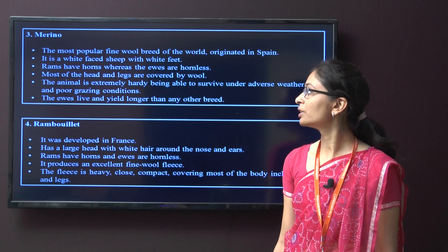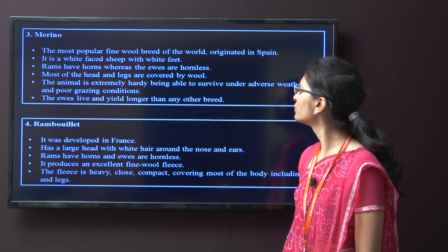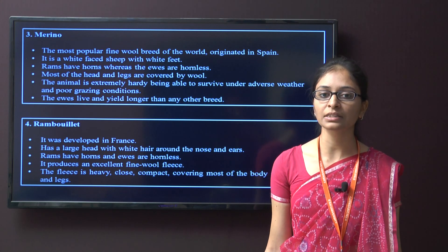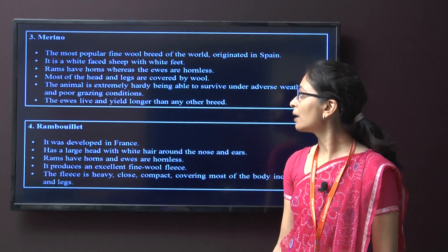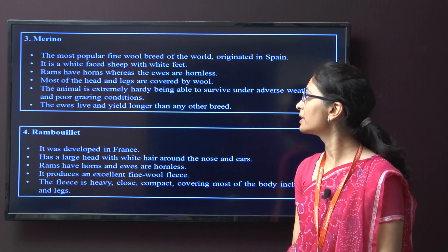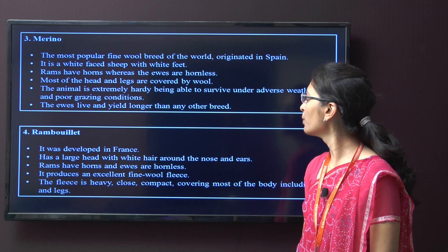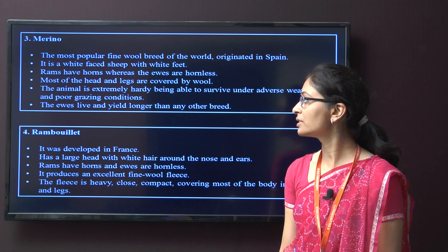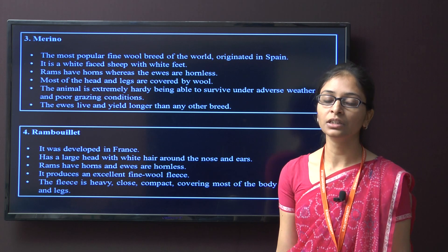The next breed for sheep is Merino. This is the most popular fine wool breed in the world, originated in Spain. It has a white face with white feet. The rams have horns whereas the ewes have no horns. Most of the head and legs are covered by wool. The animal is extremely hardy, willing, and able to survive under adverse weather and poor grazing conditions. The ewes live and yield longer than any other breed of sheep.